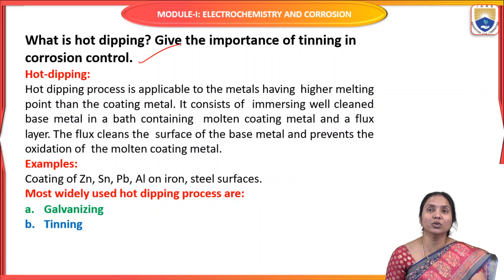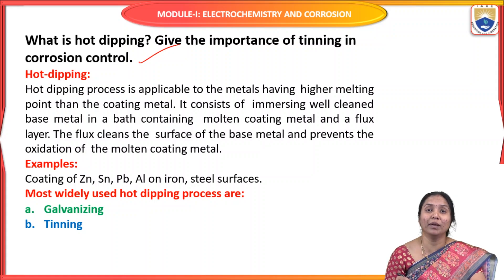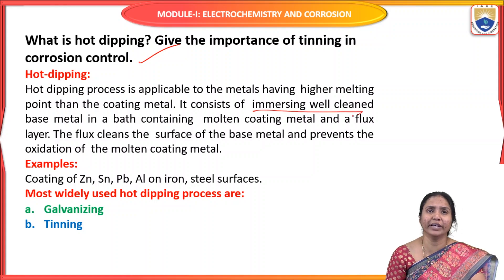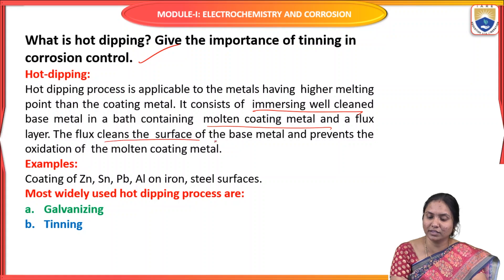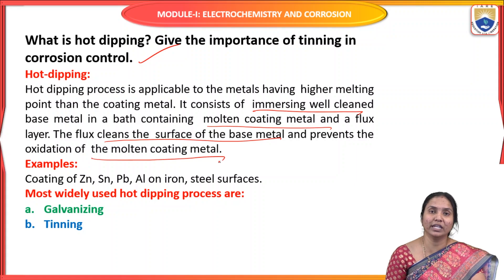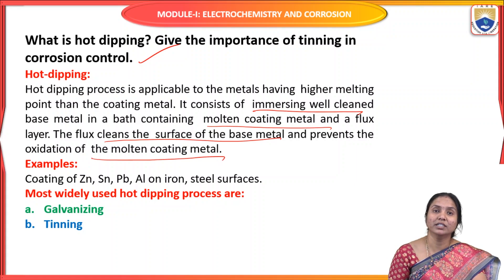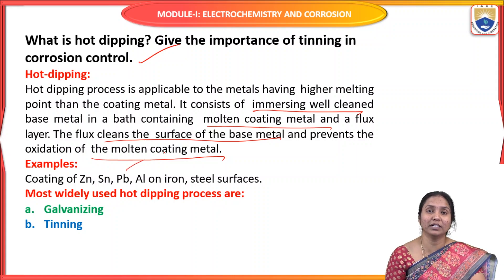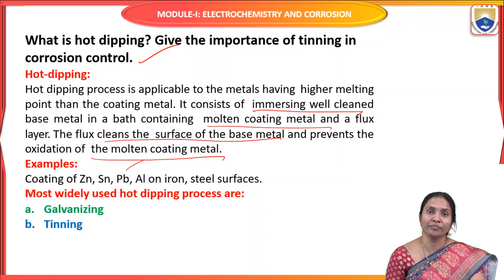The next question is: what is hot dipping? Give the importance of tinning in corrosion control. Hot dipping is a coating process applicable to metals having a high melting point, where low melting point coating metals are applied onto the base metal. It consists of immersing a well-cleaned base metal in a bath containing molten coating metal and a flux layer. The flux cleans the surface of the base metal and prevents oxidation of the molten coating metal. The best examples are coating of zinc, tin, lead, and aluminium on iron or steel surfaces.